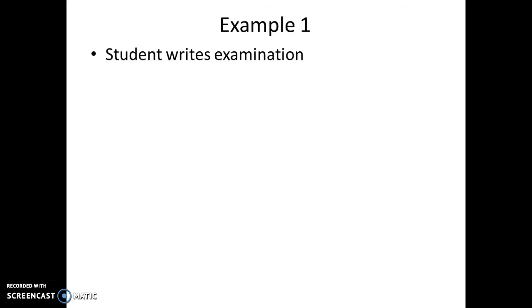Let's take the first example: student writes examination. This is one statement which has to be converted into an ER diagram. So, let's start using the ER diagram notations. We will start with identifying nouns and verbs. Over here you can identify student as a noun, examination as a noun and write as a verb. So, nouns normally become entities and verbs become relationships.